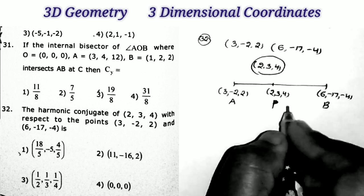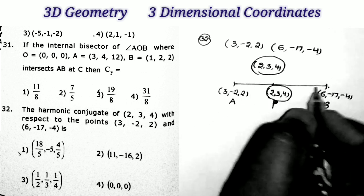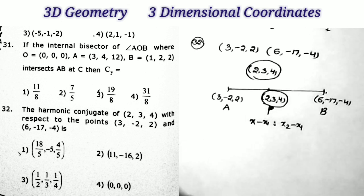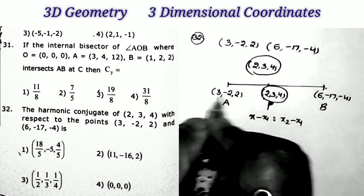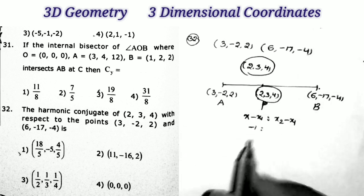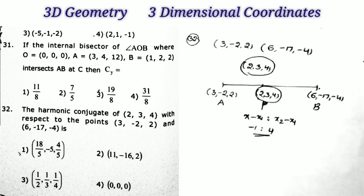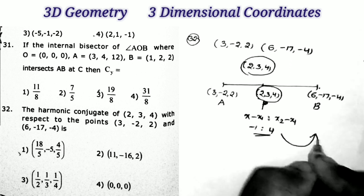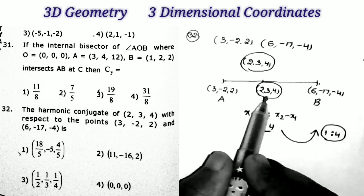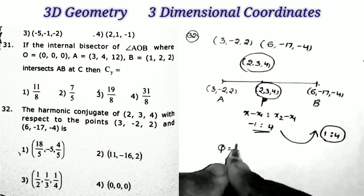For the harmonic conjugate, we first find the ratio at which the point divides the line segment. The ratio formula is: (x - x₁) : (x₂ - x). Here x₁ = 3, x₂ = 6, x = 2. So the ratio is (2-3) : (6-2) = -1 : 4.